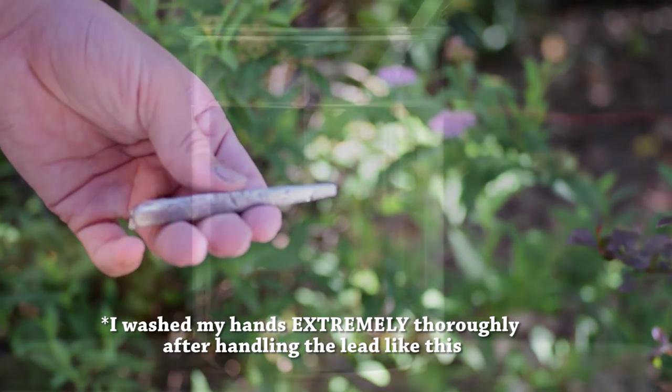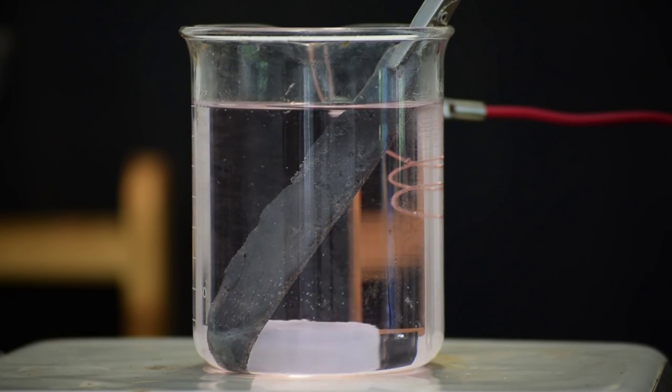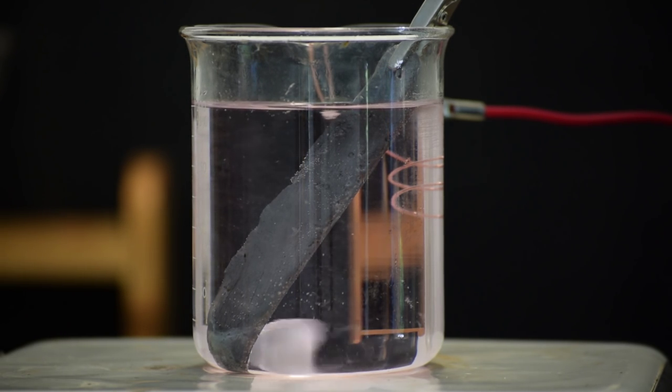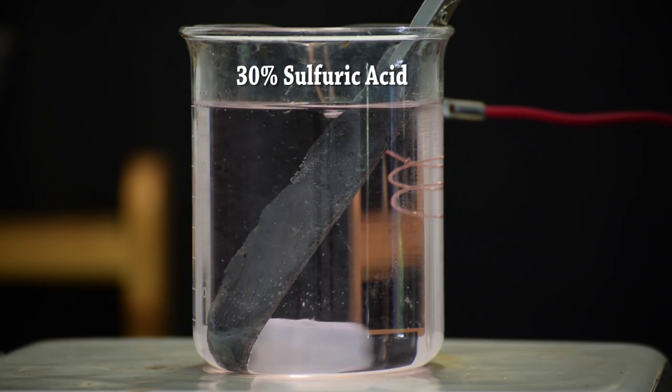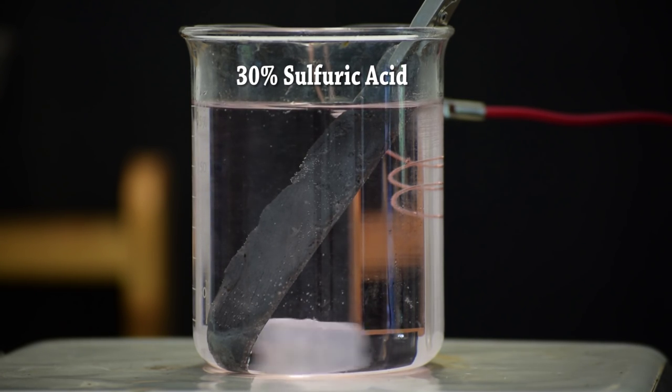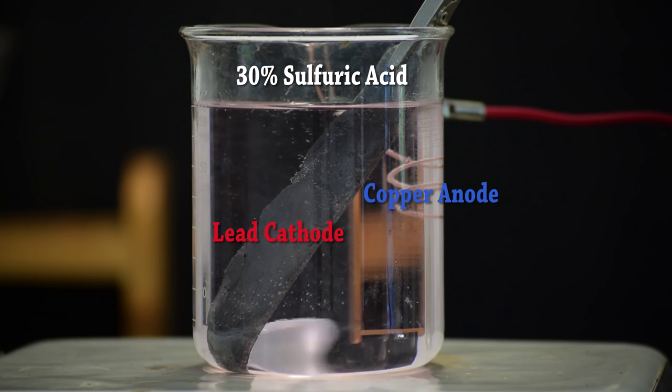Now it's time to electrolytically coat it with lead dioxide. The setup here is relatively easy to make. The liquid is 30% sulfuric acid and is being stirred by a magnetic stir bar. This will keep the sulfuric acid solution moving and it will provide a better lead dioxide coating in the end. The lead bar that I made earlier is hooked to the positive output of a DC power supply, and a copper wire is hooked to the negative output.